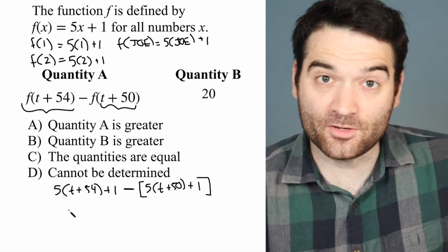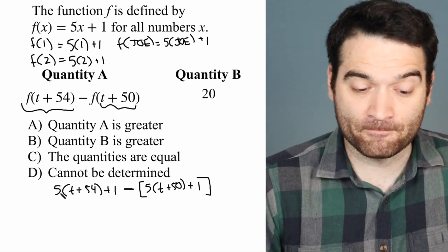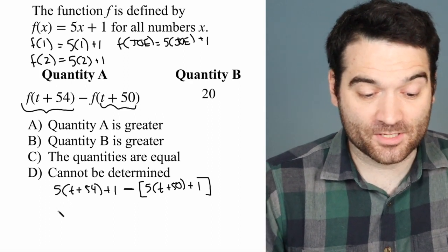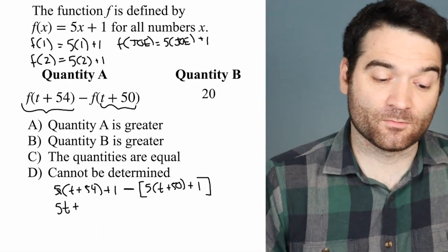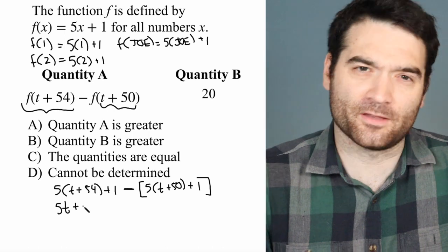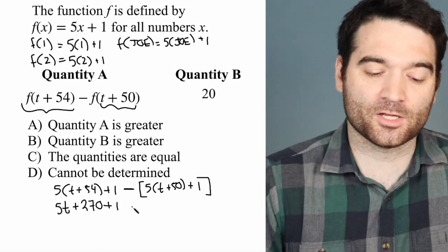And then all I have to do now is distribute and evaluate out. So I'll distribute this 5 in. 5 times t is 5t plus what's 5 times 54. That's 270. Plus 1,